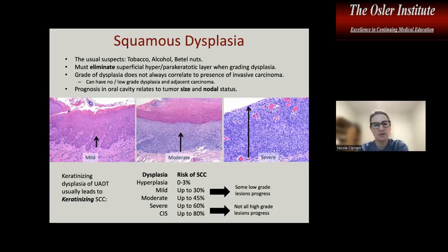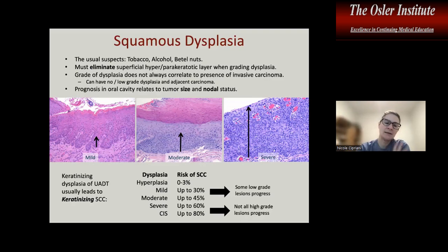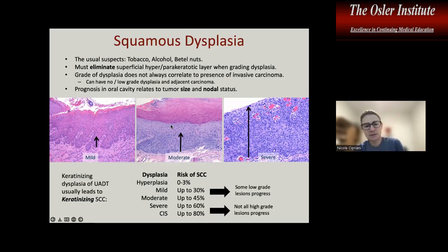Moving on to squamous dysplasia and squamous carcinomas. We'll think about these in two ways: classic keratinizing carcinomas related to environmental carcinogens such as tobacco, alcohol, and betel nut chewing; versus non-keratinizing carcinomas related to virus. When grading keratinizing dysplasia, eliminate the superficial hyperkeratotic or parakeratotic layer. There is a lot of inter-observer variability, and the grade of dysplasia does not always correlate with the presence of invasive carcinoma — low-grade dysplasia can develop into carcinoma without progressing through mild, moderate, and severe stages.